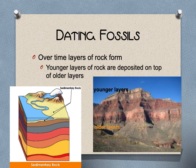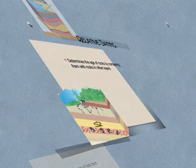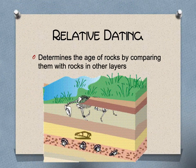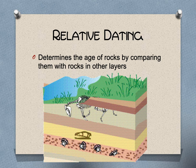If you find a fossil, you have to figure out how old it is. Over time, layers of rock form, and the younger layers are deposited on top of the older layers — this is called sedimentary rock. This picture is from the Grand Canyon. Relative dating means: if you find a fossil in a layer already identified as 550 million years old, that fossil is probably 550 million years old. The deeper you go, the older the fossils are.